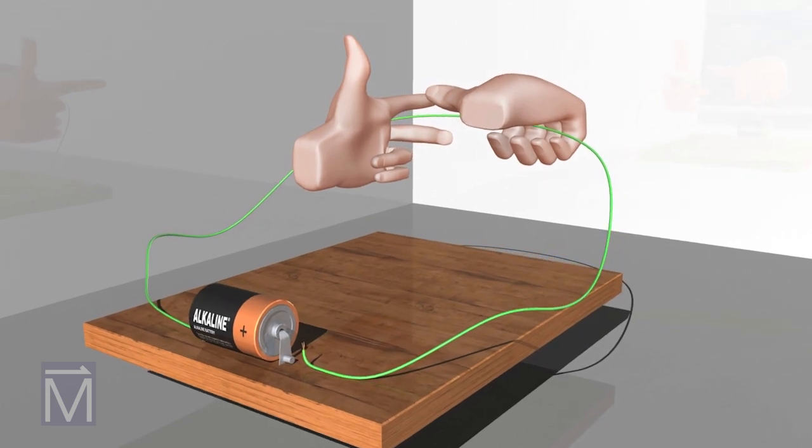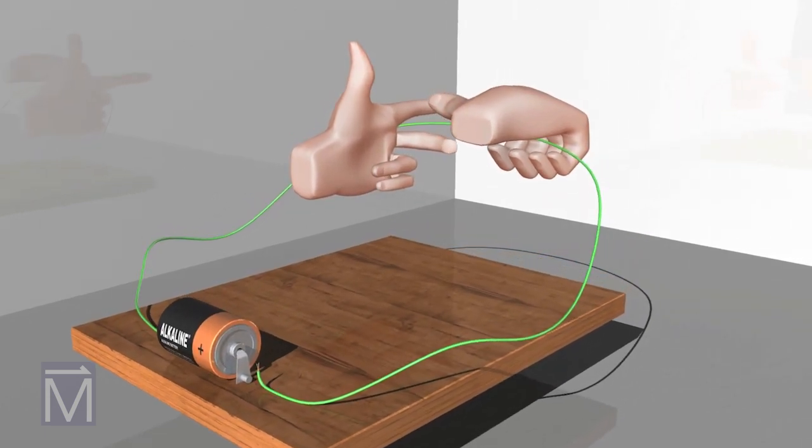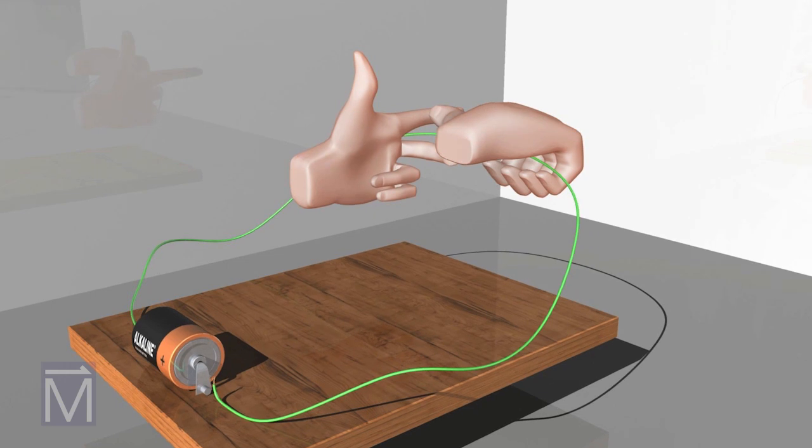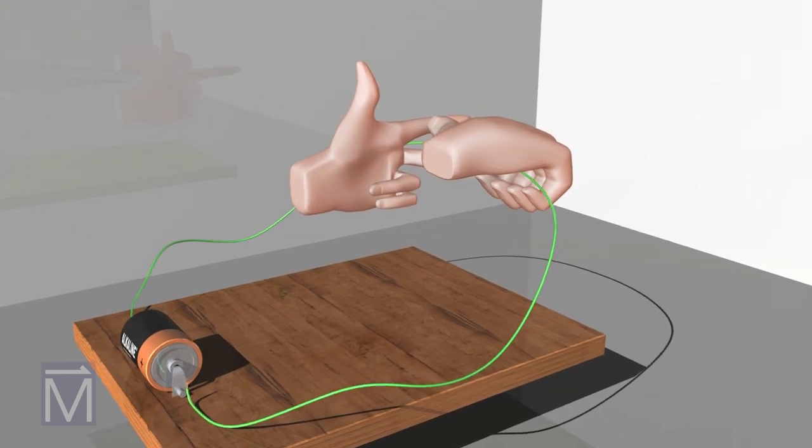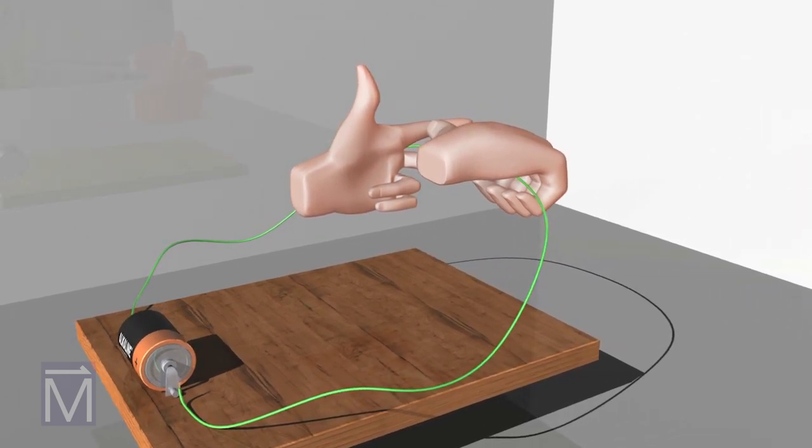Electromagnetism can be a complicated subject, but luckily you can find two of the most useful tools for understanding it right at the end of your arms. Your hands. They help you to write letters, type on a computer, and throw a frisbee. They also help you understand two concepts of electromagnetism.